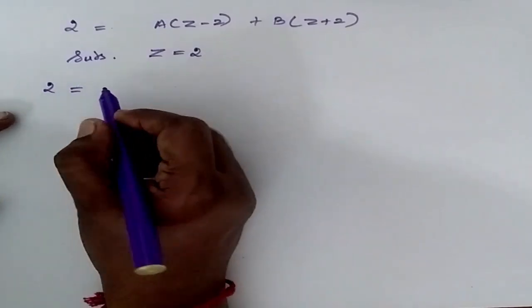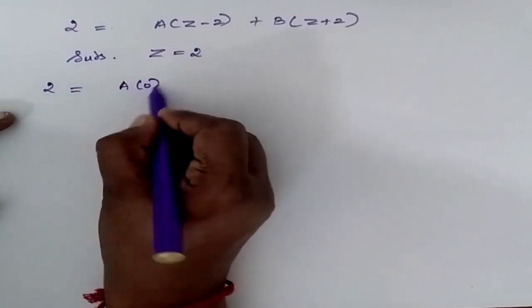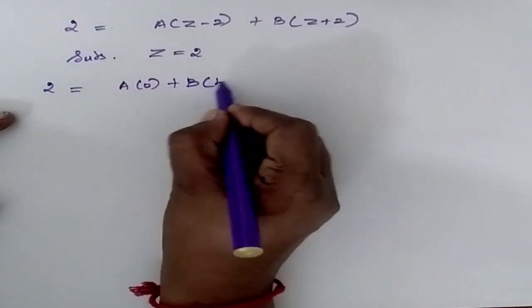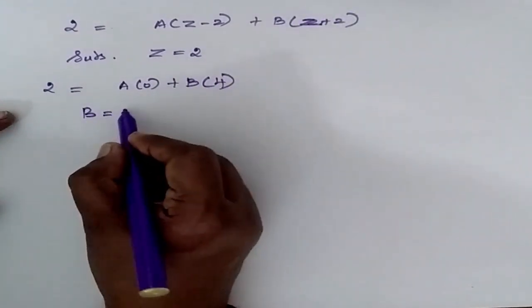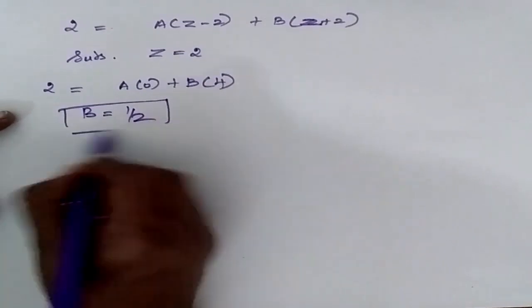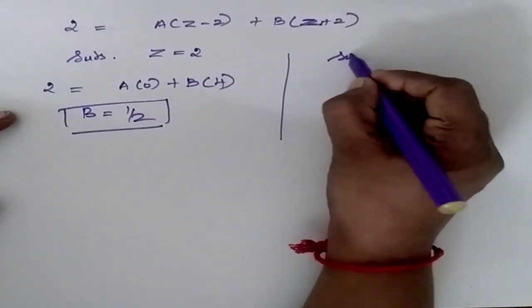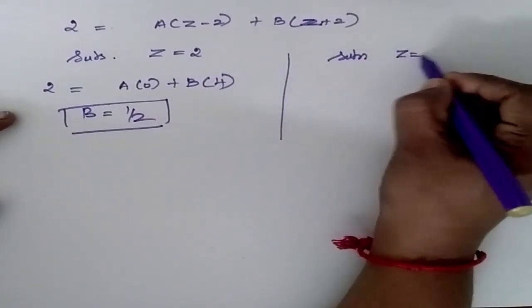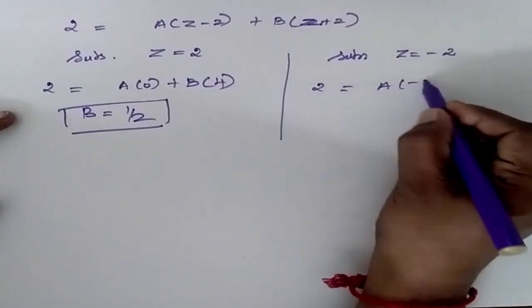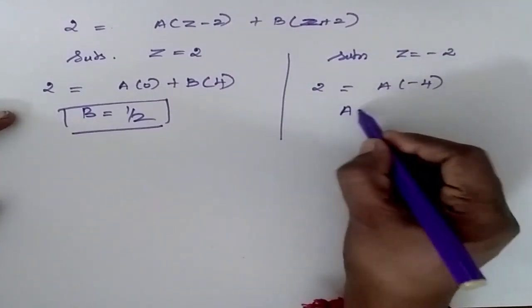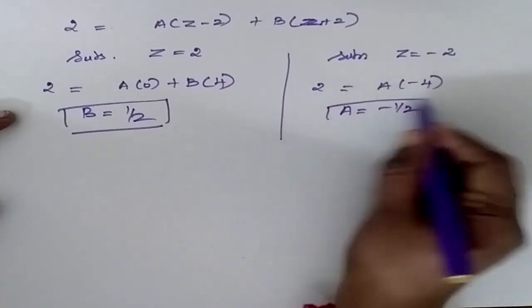Now substitute Z is equal to 2. So I will be getting 2 is equal to A into 0 plus B into 4. So my B is equal to 1 by 2. Now substitute Z is equal to minus 2. So 2 is equal to A into minus 4 that will become 0. So A is equal to minus 1 by 2.